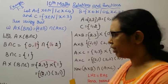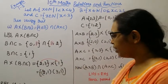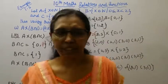That's the left hand side. Now right hand side: A cross B intersection A cross C.